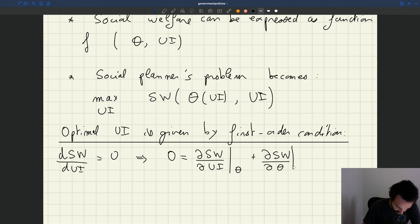Zero has to be equal to the partial derivative of social welfare with respect to UI, keeping theta constant, plus the partial derivative with respect to theta. This is standard chain rule for multivariate functions.